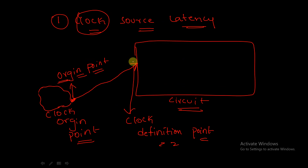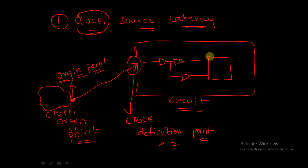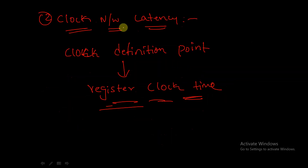Let's see by example. This is our clock definition point. From here, in the circuit we have some buffers or some logic gates connected. At the end we have a register or flip-flop. The time it takes for the clock signal to propagate through all this combinational circuit and reach the register clock pin is called clock network latency. So these are the clock latencies in the clock.